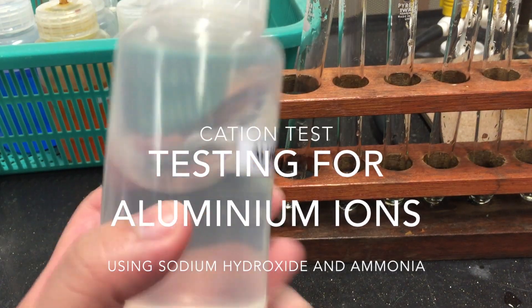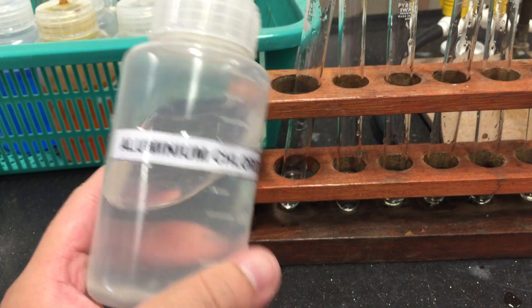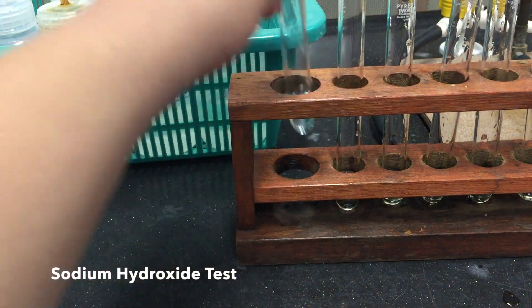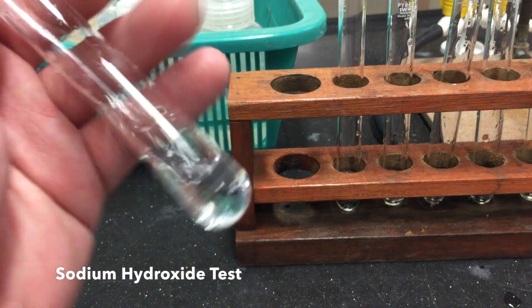Solutions containing aluminum ions are usually colorless. You can test for the presence of aluminum ions using the sodium hydroxide test.